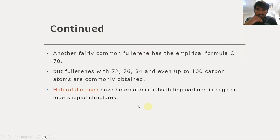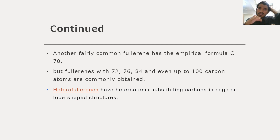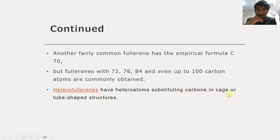Another fairly common fullerene has the empirical formula C70. After C60, we also have C72, C76, C84, and even up to 100 carbon atoms commonly obtained in fullerene synthesis. C60 is the most common, while C70 is also found; C72, C76, C84, and those up to 100 are rare fullerenes. We also have heterofullerenes, where heteroatoms substitute carbon atoms in the cage or tube-shaped structure.